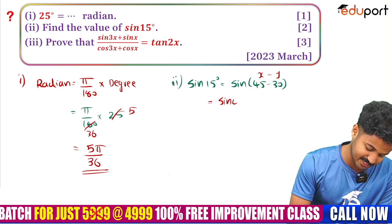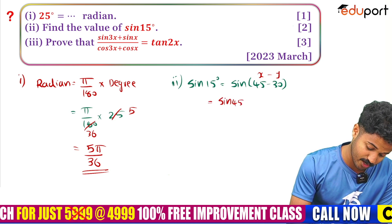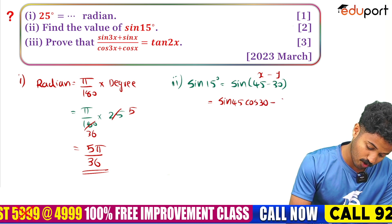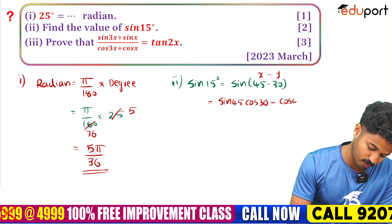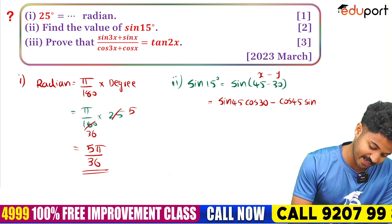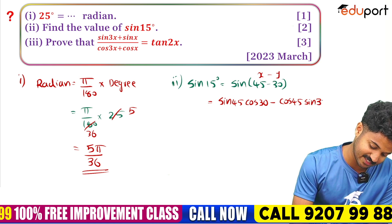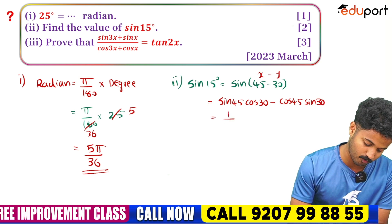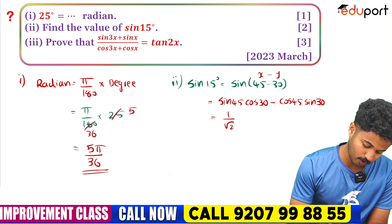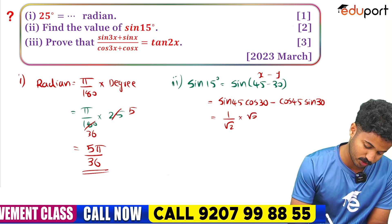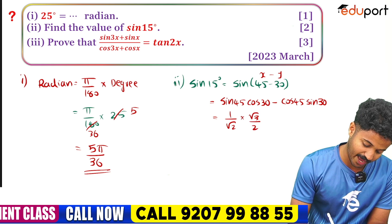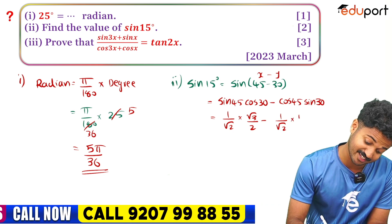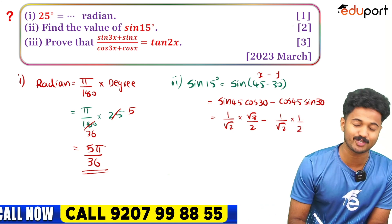Expanding: sin(45°)·cos(30°) − cos(45°)·sin(30°). So sin45 = 1/√2, cos30 = √3/2, and cos45 = 1/√2, sin30 = 1/2.